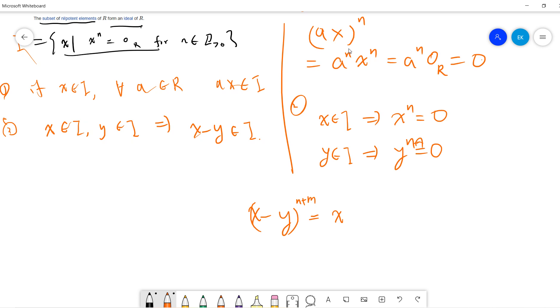This is n plus n. By the binomial expansion, this is x^(2n) minus some coefficient times x^(2n-1)y^1 plus terms up to y^(2n). Since this is 2n, for any term either the power of x is at least n or the power of y is at least n, so each term equals zero. Therefore the whole expression is zero.